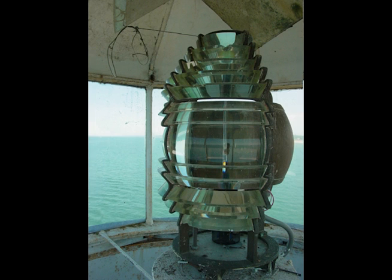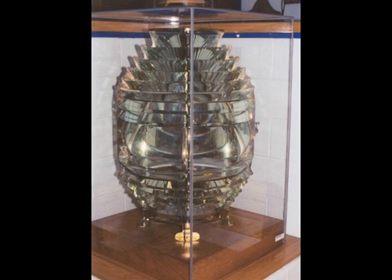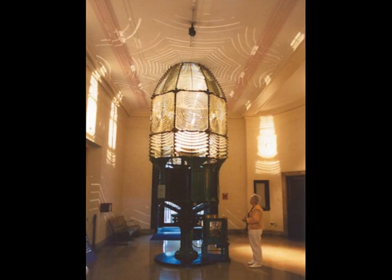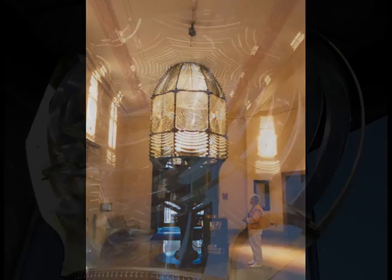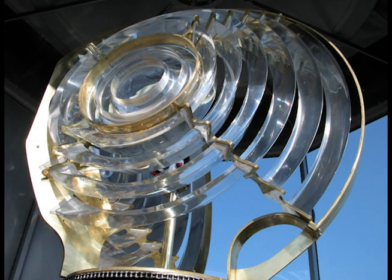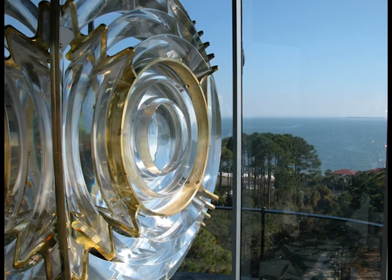The ability to protect and preserve historic Fresnel lenses by removing them from lantern rooms and placing them in museum controlled environments could be accomplished, and the lighthouse organizations around the country would have the option to exhibit a reproduction lens in their lighthouse as an aid to navigation.